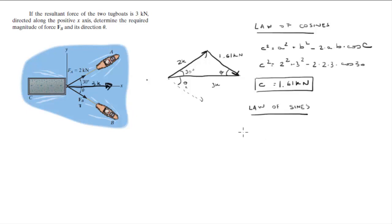The law of sines says that a over sine of angle A equals b over sine of angle B, which equals c over sine of angle C. So 2K over sine of theta equals 1.61 over sine of 30 degrees.